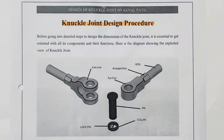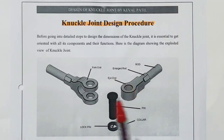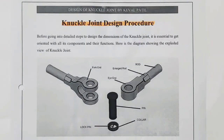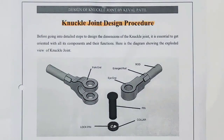One important point to remember about the knuckle joint is that it permits limited angular movement between the rods. So if the rods have some angular movement, that is permitted. In the case of a cotter joint, there is no angular movement between the rods — that is not permitted.